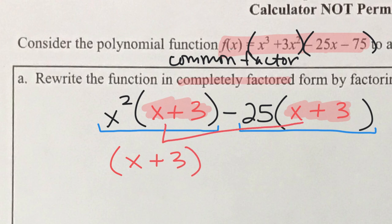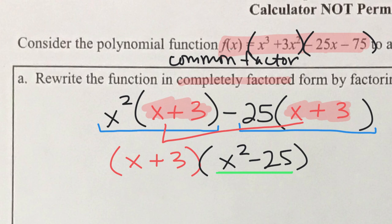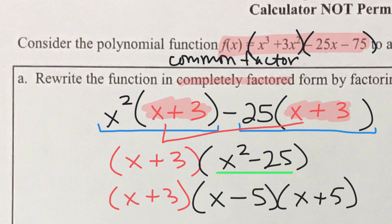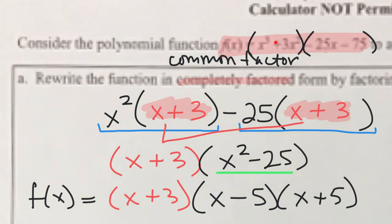Both of these get factored out as one single thing, and we have x² minus 25 left over. The question then becomes: can you further factor this quadratic — this difference of squares? Yes. What numbers multiply to give negative 25 and add to give 0? Those are minus 5 and plus 5. We have now successfully rewritten our polynomial from standard form to factored form by grouping.